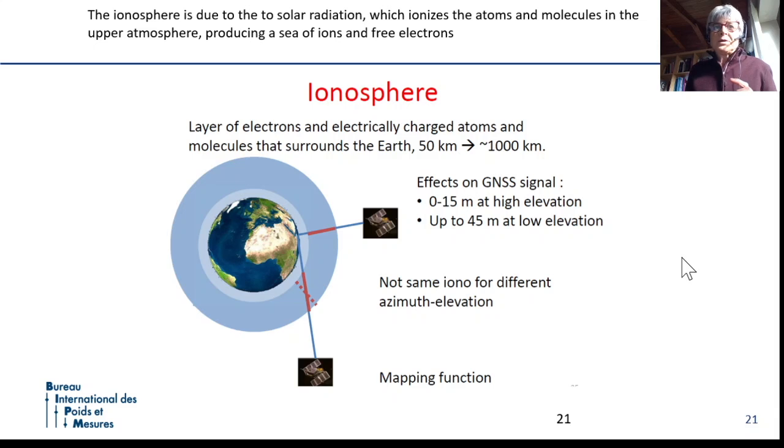One important issue is the ionosphere. The ionosphere is a sort of layer around the Earth, which is full of ions, which change the velocity of the electromagnetic signal. And depending if the satellite is directly on your head or if you have very low inclination, the layer of the ionosphere is different. So the influence on the satellite signal is different.